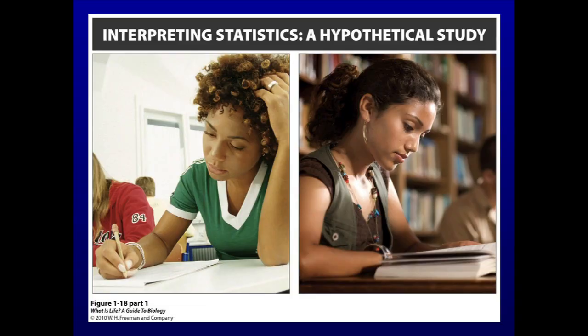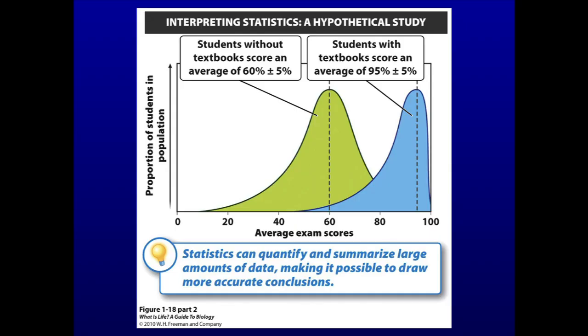Is that really how science is done? Not entirely. You can make a hypothetical study — like does studying improve your test scores? In fact, as shown in a figure from the textbook, students without a textbook score an average of 60% ± 5, while students with a textbook score higher. Of course, this might be the textbook author's way of selling his book — we should be suspicious of bias in all studies.